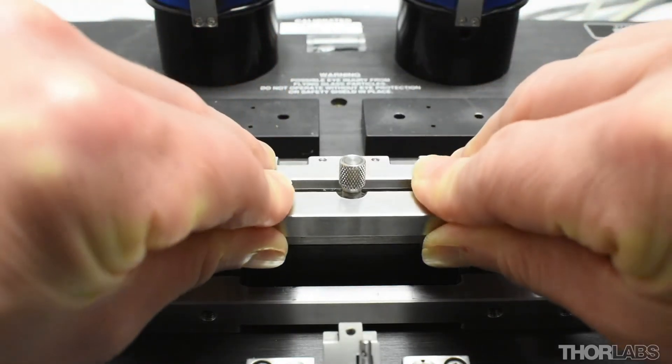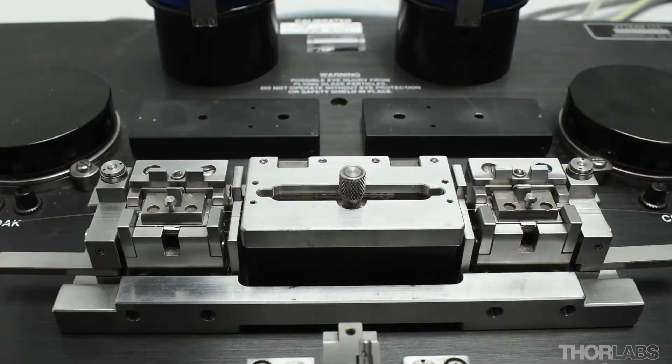There are magnets in the lid of the mold to hold it shut. Gently close the lid so that the fiber lies in the cavity created by the channels in the upper and lower plates.